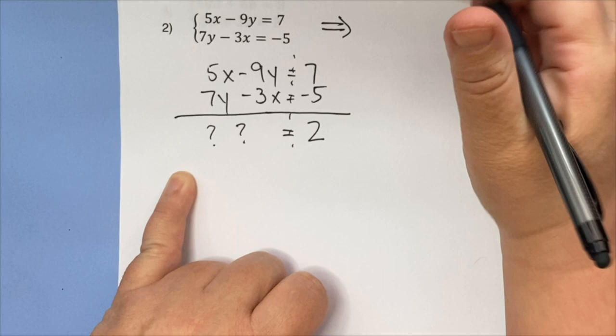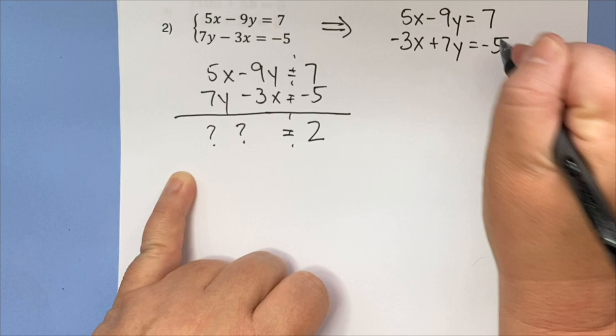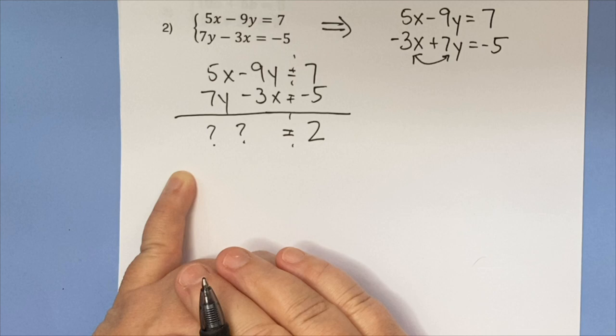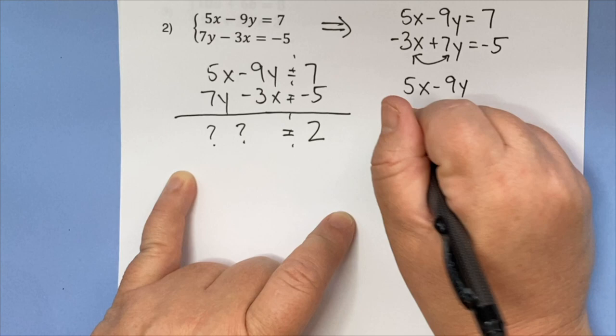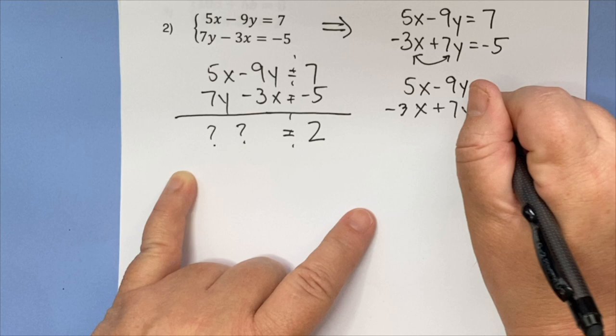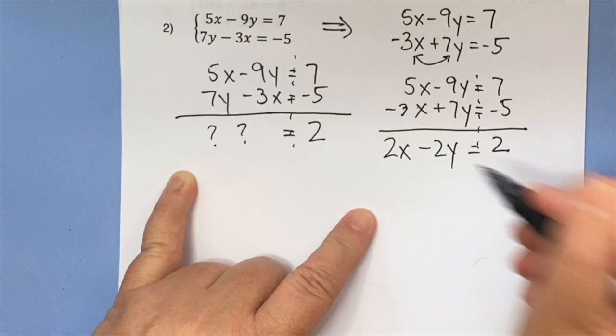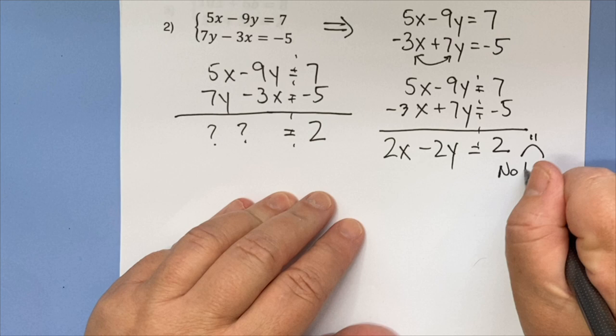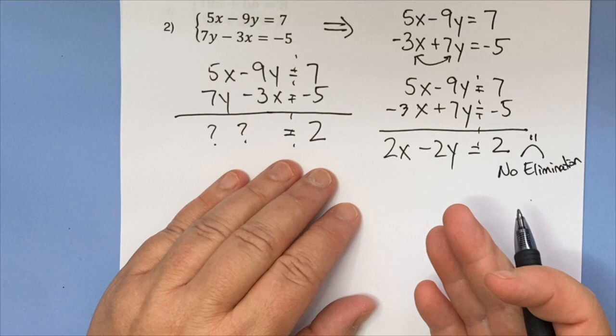So if I've got 5x minus 9y equals 7, then I'm going to rewrite this one as negative 3x plus 7y equals negative 5. Did you see me switcheroo those two? And that way I've got an x and a y and everything is lined up. So then if we try this, 5x minus 9y, negative 3x. We're going to add them. I get 2 over here. I get 2x minus 2y. And there was, sad face, no elimination. This is called elimination because you're supposed to get rid of an x or a y. And clearly I didn't.